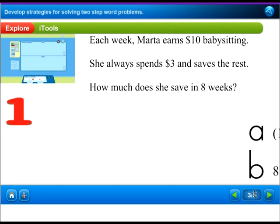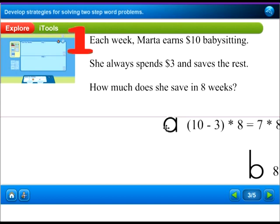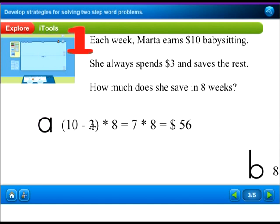Let's look at this as we move on towards working with real-life story problems. Each week, Marta earns $10 babysitting. She always spends $3 and saves the rest. How much does she save in 8 weeks? What is the first step, question, and answer for this problem? We need to know how much Marta earns each week - she earns $10. What's the next step? We want to know how much she saved in 8 weeks, but she always spent $3 and saves the rest. So here's one example: we can go (10 minus $3) each week times 8, because she worked for 8 weeks. 10 minus 3 is 7, then 7 times 8 equals 56.